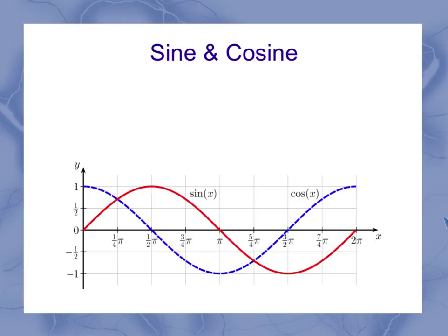One important thing to notice here is that both sine and cosine range between a maximum value of 1 and a minimum value of minus 1.